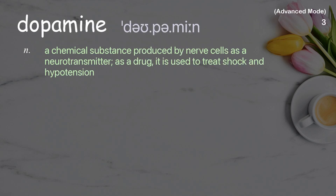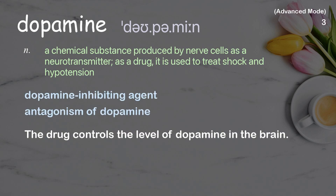Dopamine: a chemical substance produced by nerve cells as a neurotransmitter. As a drug, it is used to treat shock and hypotension. Examples: dopamine inhibiting agent, antagonism of dopamine. The drug controls the level of dopamine in the brain.